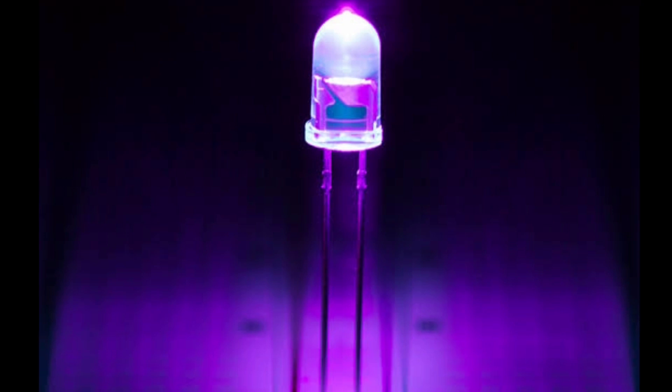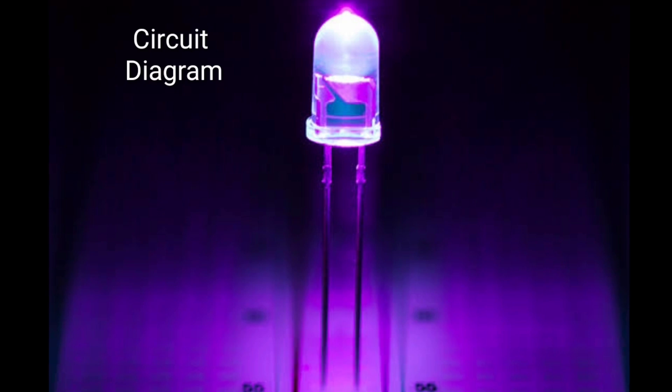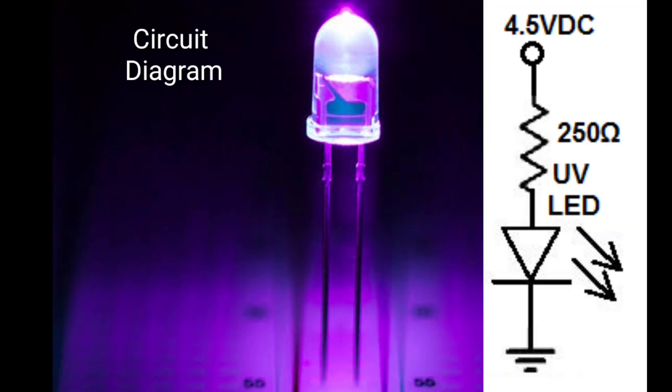To power a UV LED, all we need is the right voltage and current. A resistor is needed so that we can bias and limit the current so that the correct amount flows to the LED.